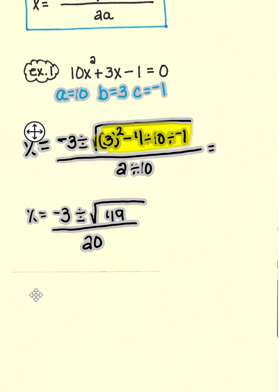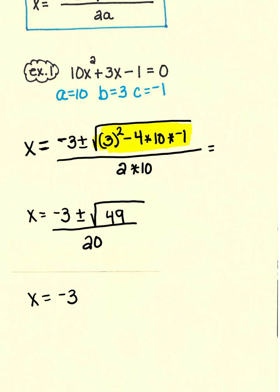Then we're going to simplify this because the square root of 49 is a perfect square of 7 all over 20. Because these are like terms, we must break it off into the plus and into the minus.